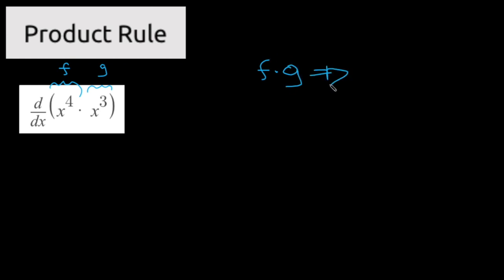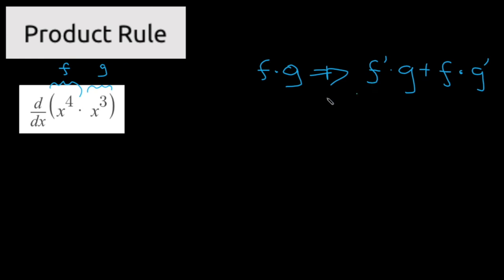When we differentiate f multiplied by g, this becomes the derivative of f multiplied by g, plus f multiplied by the derivative of g. This is a really simple example — we're going to use it just to keep the logical steps clear. So what we need to do is start defining our terms.